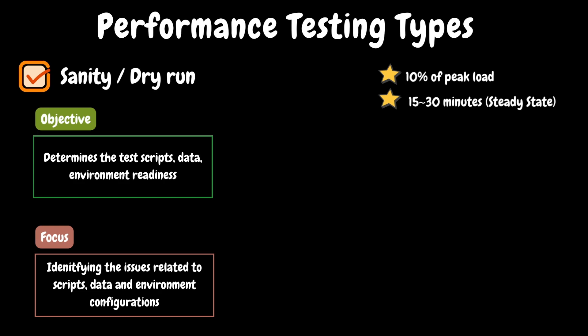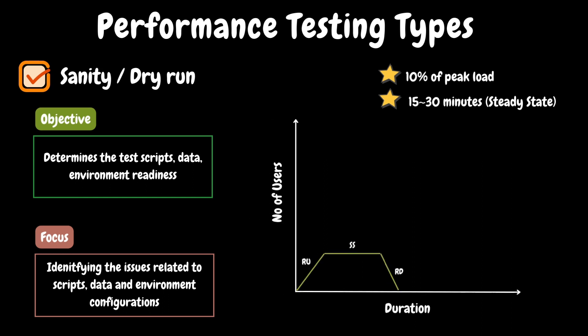We should plan for some additional time to ramp up and ramp down — this planning is applicable for all test executions. For example, let's assume ramp up is 5 minutes and ramp down is 5 minutes. So the total duration would be 5 minutes of ramp up plus 15 minutes of steady state and 5 minutes of ramp down — that is a total of 25 minutes. If we represent this in a graph, it should look like a trapezoid shape, where RU means ramp up, SS means steady state, and RD means ramp down.